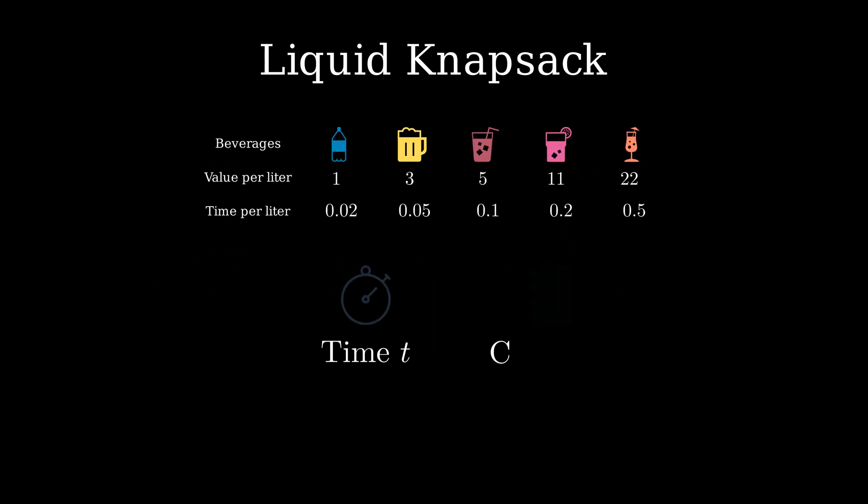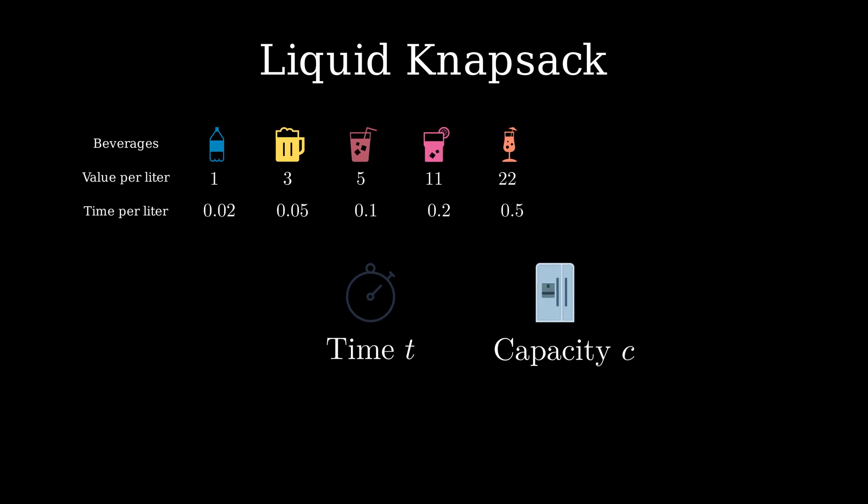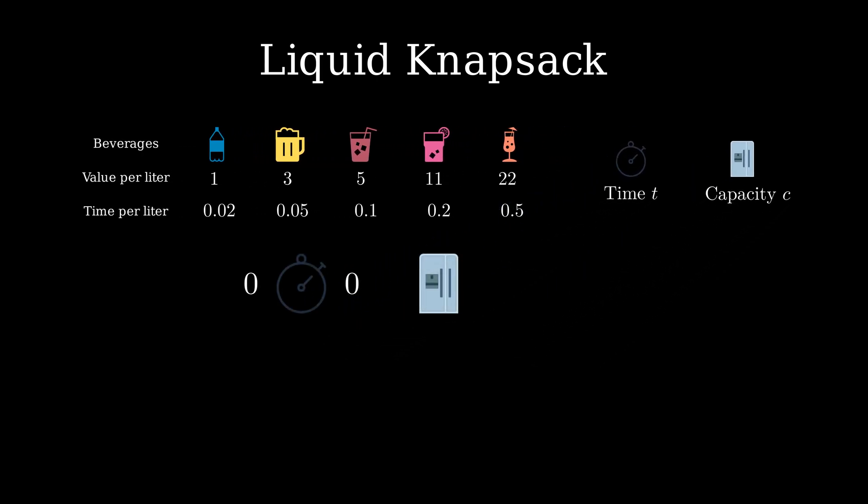Furthermore, we have t hours to prepare for a party and have a fridge with storage capacity C. What is the maximal value that can be prepared in less than t hours and stored in the fridge of capacity C? Assume t is 10 hours and the fridge has a capacity of 100.